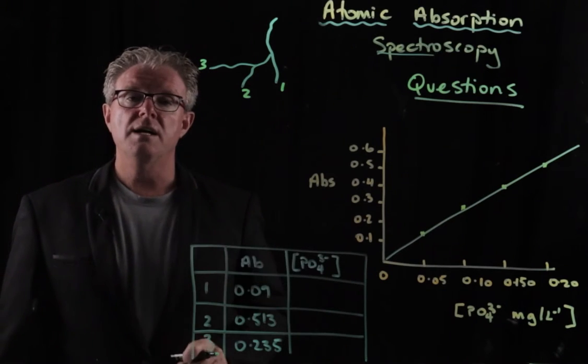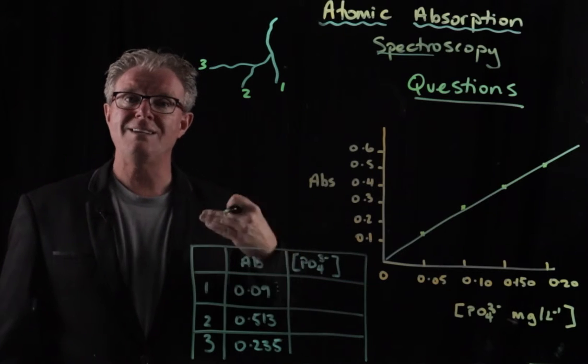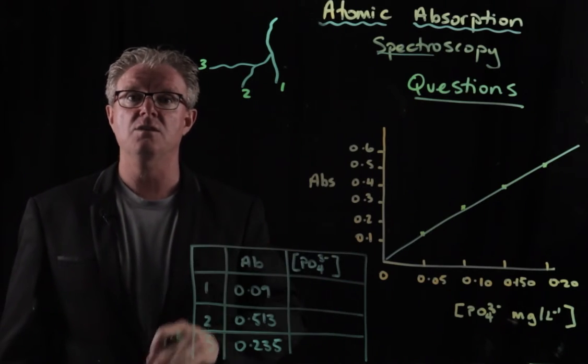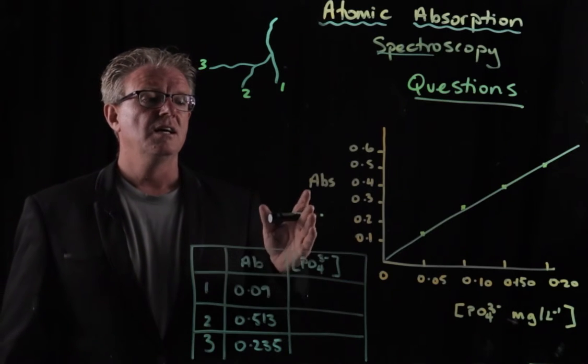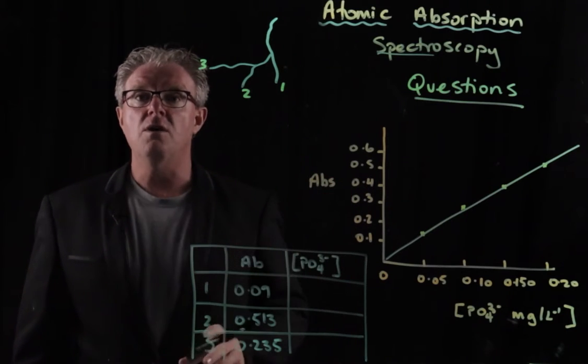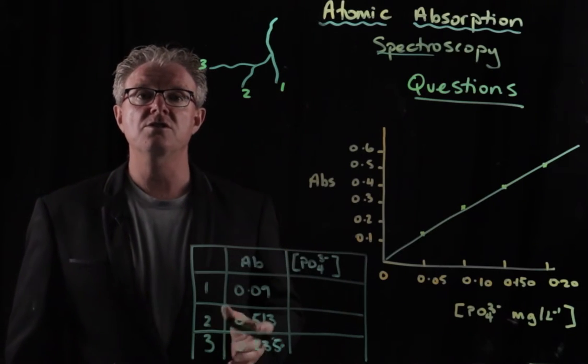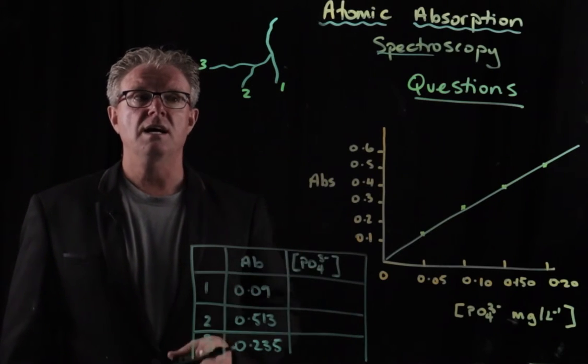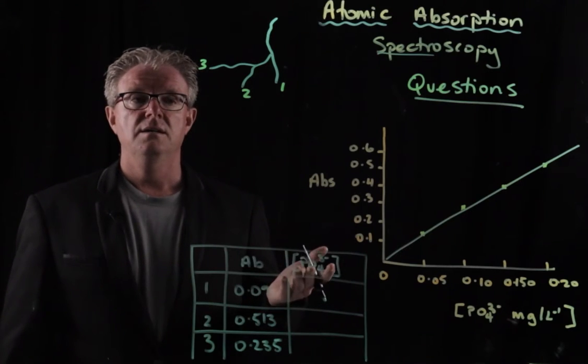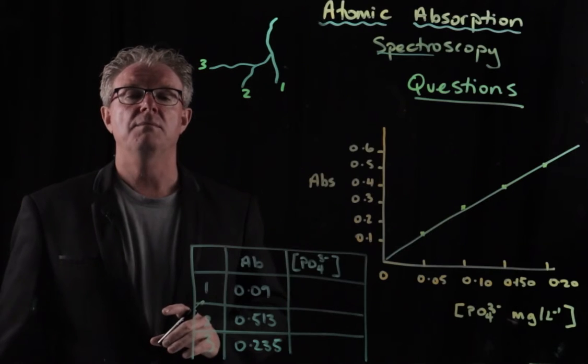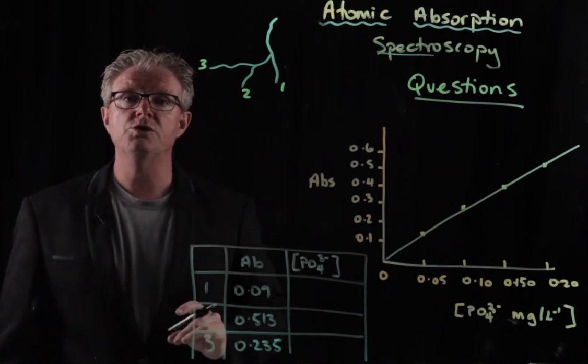But just keep in mind that atomic absorption spectroscopy, in reference to the level of detail that you need for, let's say, a New South Wales HSC question, is that it is only used for metal ions and that we determine the concentration of phosphates by using other methods. Such as the molybdate ascorbic acid complex reaction, which makes a blue solution.